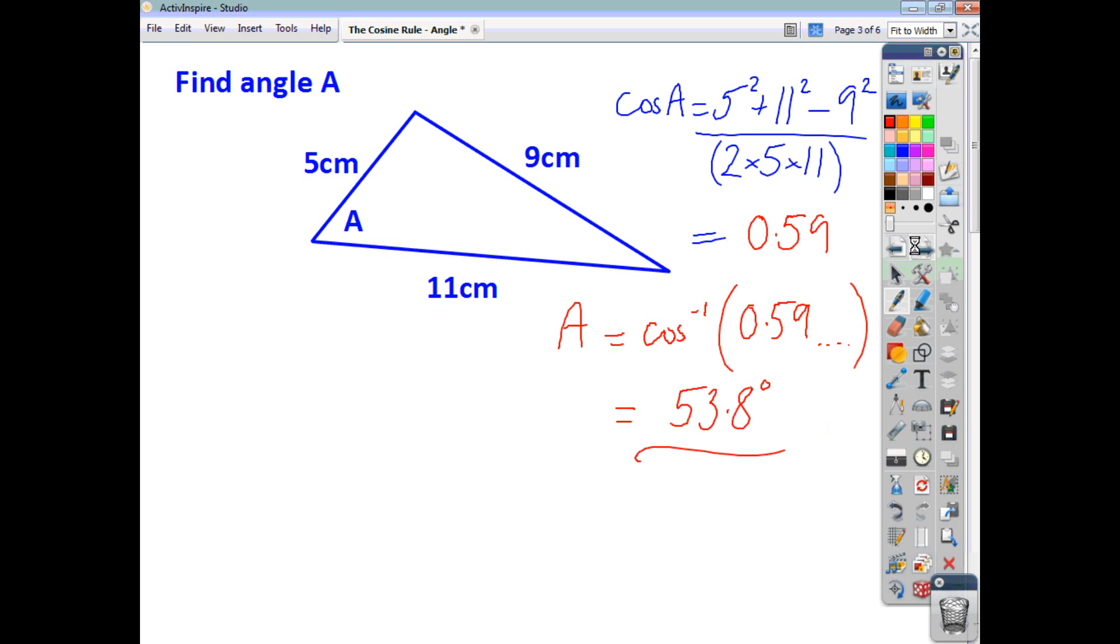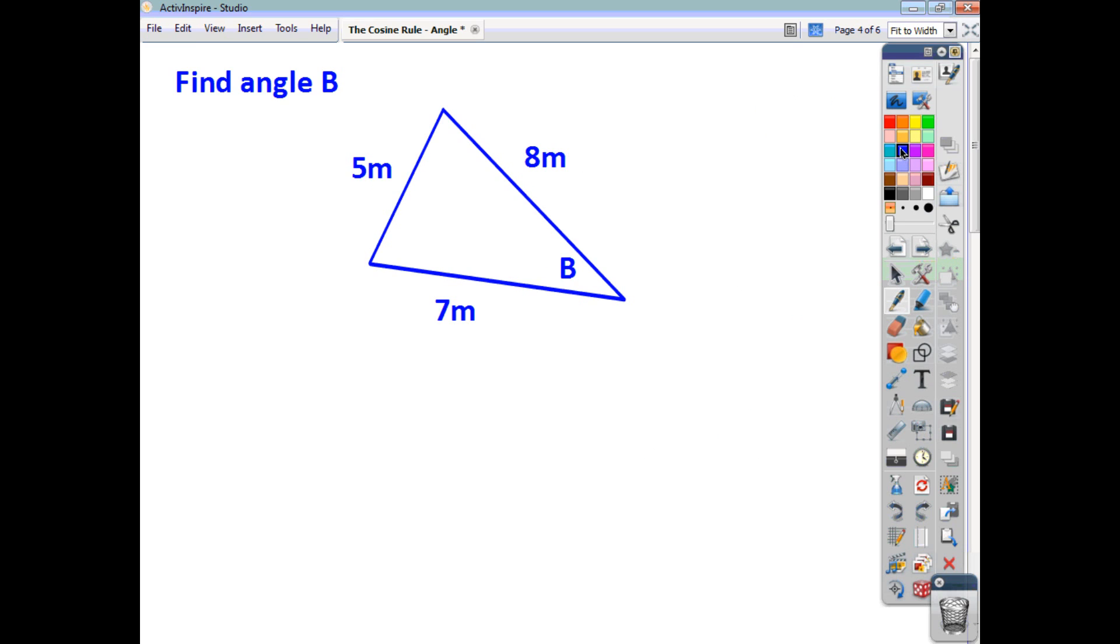Let's have a look at another example. This time we're looking to find angle B, and notice that across from angle B is the side that's 5 meters long, so that's what you're going to take away. You can start off by saying cos of your angle is going to be this squared plus this squared. So we'll say 8 squared plus 7 squared minus 5 squared, because 5 is across from our angle. And we then divide by 2 times BC, so in this case, 8 times 7.